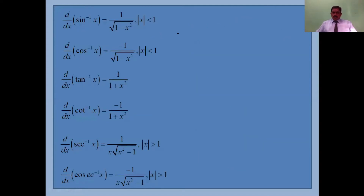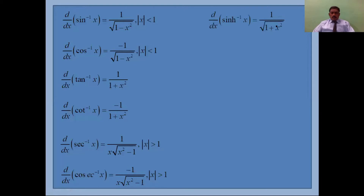Now we are going to see the differentiation formulas for hyperbolic inverse functions. The differentiation of sinh⁻¹(x) is equal to 1 divided by the square root of (1 + x²). Since we have a plus here, no condition needs to be written.